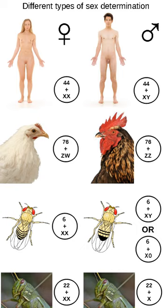In some species of reptiles, including alligators, some turtles, and the tuatara, sex is determined by the temperature at which the egg is incubated during a temperature-sensitive period. There are no examples of temperature-dependent sex determination in birds. Megapodes had formerly been thought to exhibit this phenomenon, but were found to actually have different temperature-dependent embryo mortality rates for each sex. For some species with TSD, sex determination is achieved by exposure to hotter temperatures resulting in the offspring being one sex and cooler temperatures resulting in the other. This type of TSD is called pattern I.